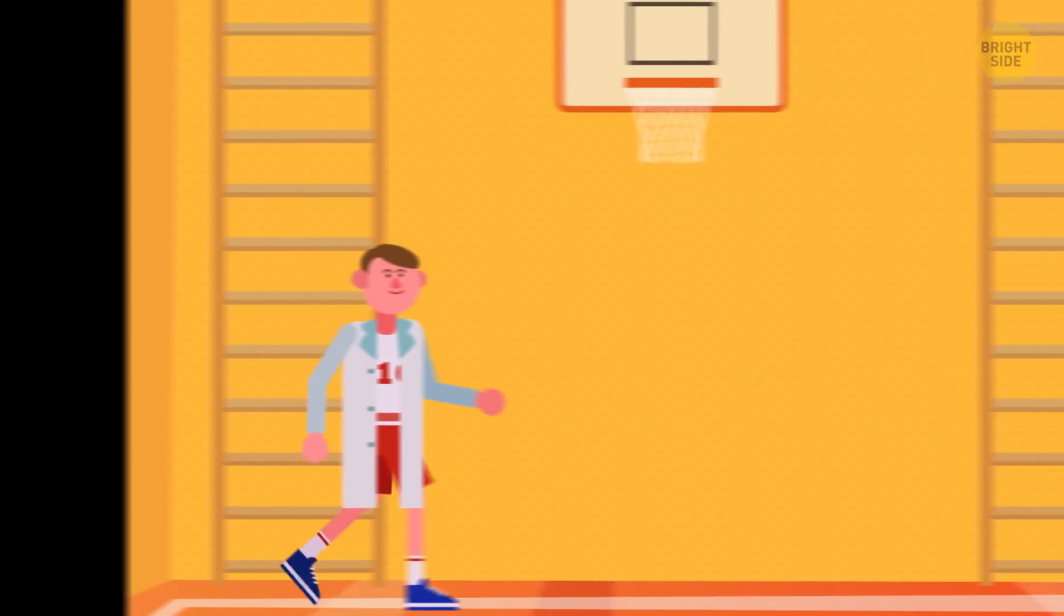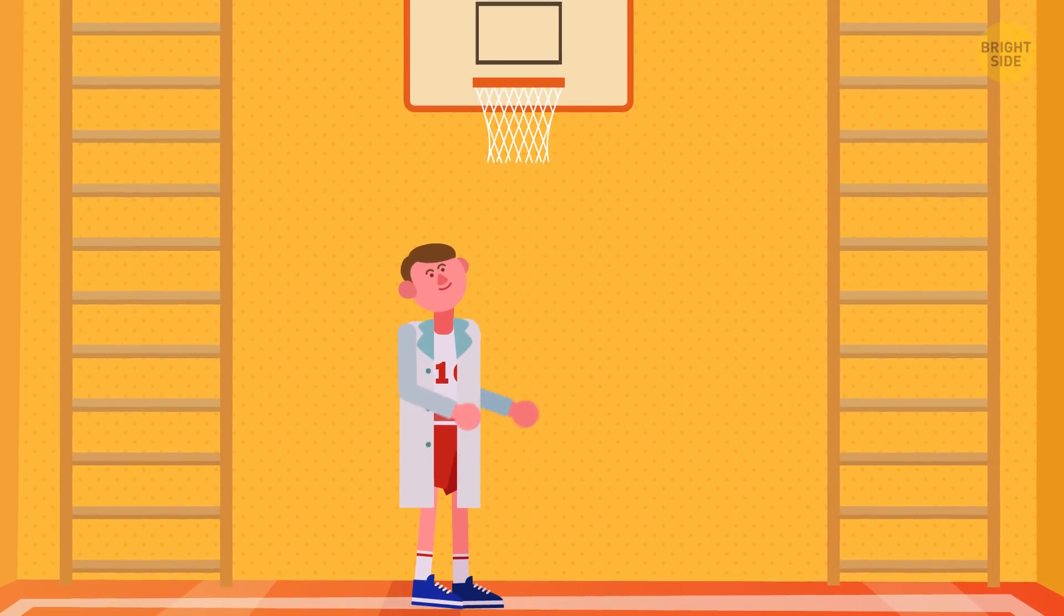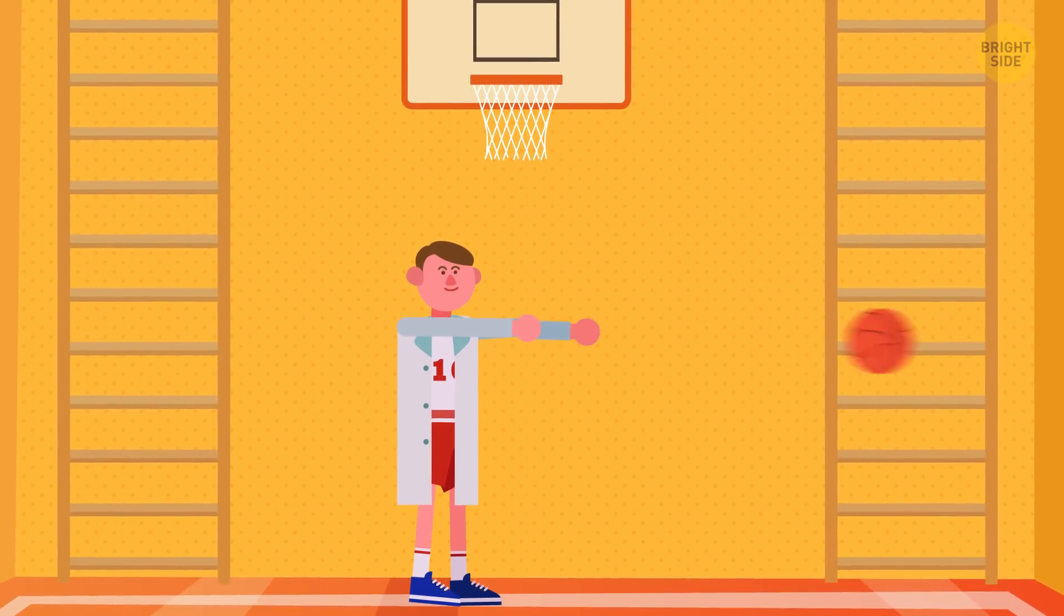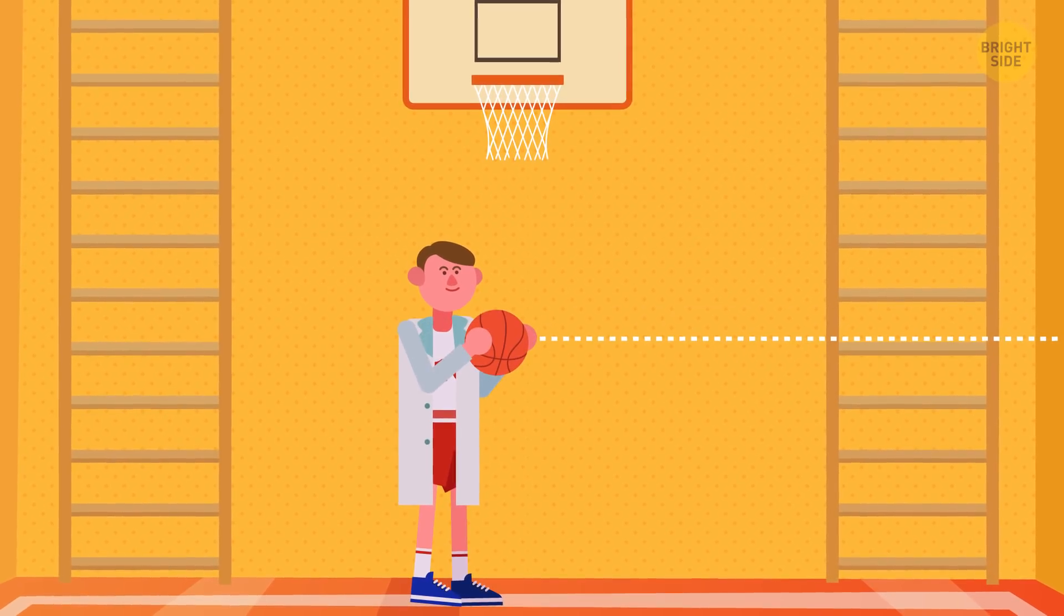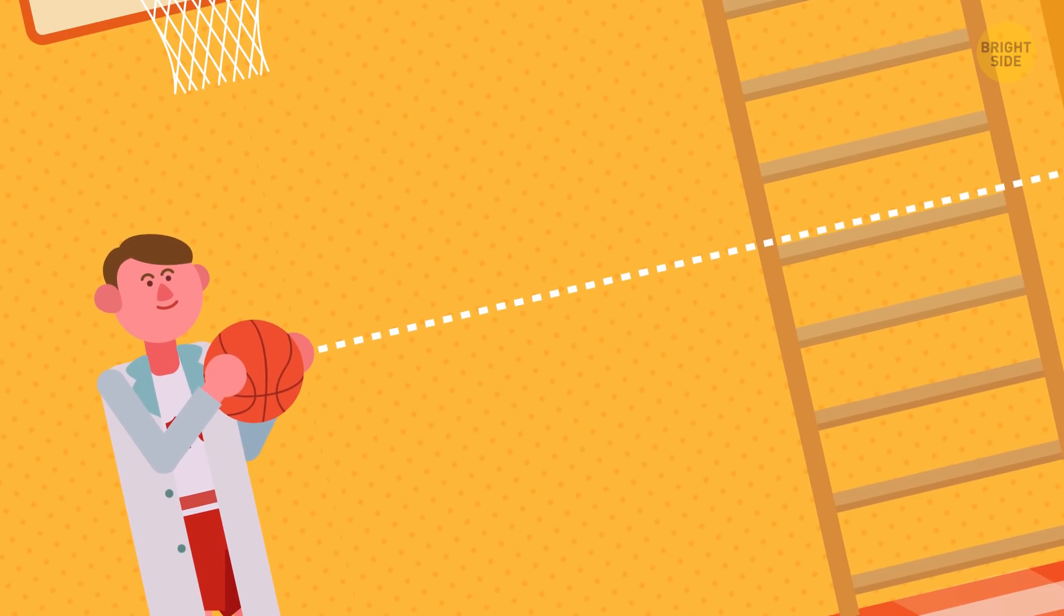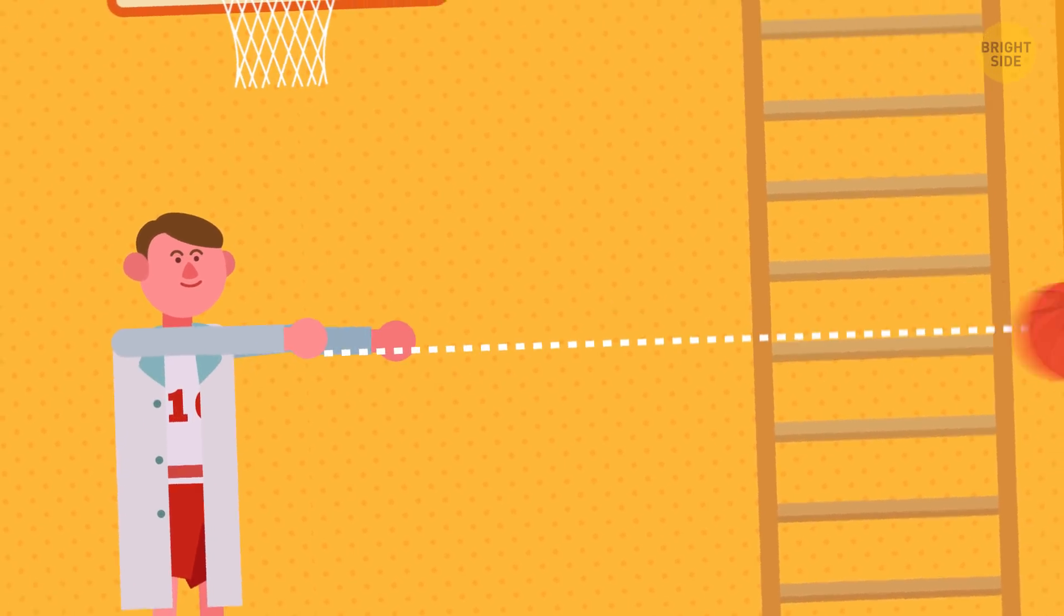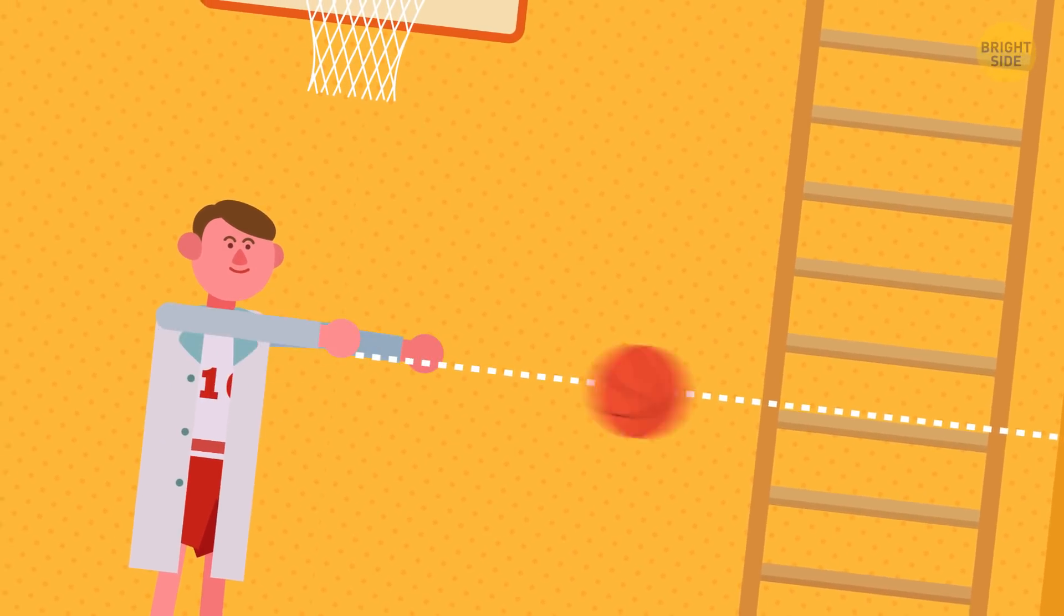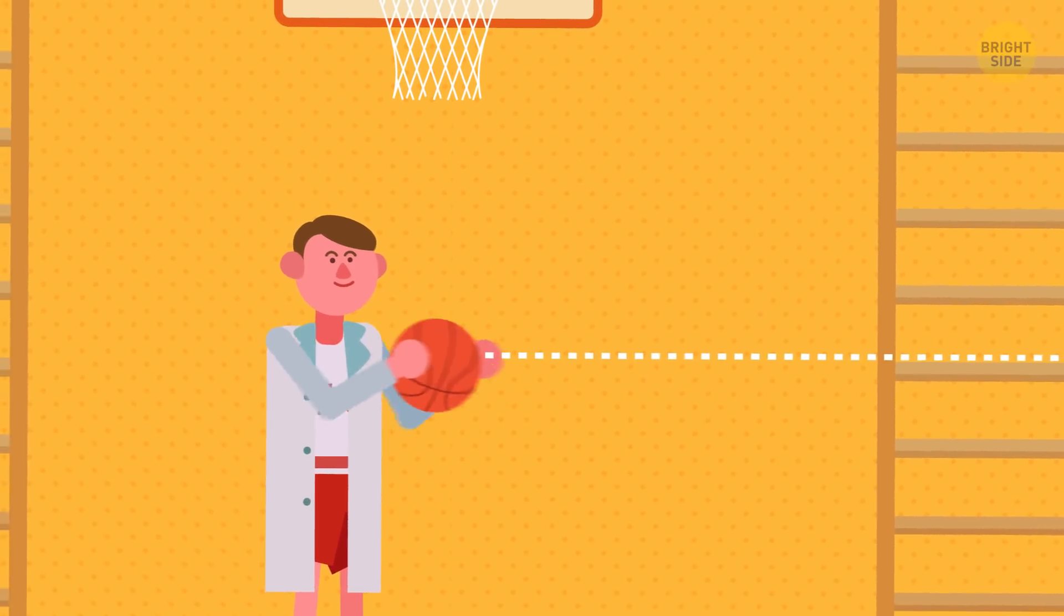The easiest way to imagine what really happened during these experiments is to take a ball and throw it at the wall. It'll bounce right back into your hands. Under the right circumstances, like the force you apply to the ball and the angle at which it strikes the wall, it will return to you while flying the same path at the same speed as when it went to the wall in the first place.